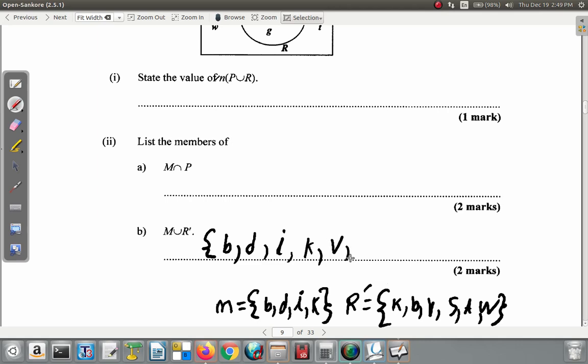v is in R only - remember k and b are in both, but v is in R only. Write down v, s, t, and w. So this represents M union R complement: {b, d, i, k, v, s, t, w}.